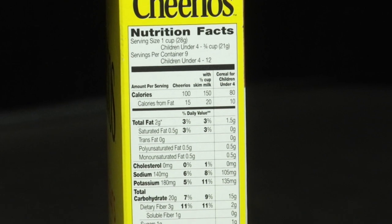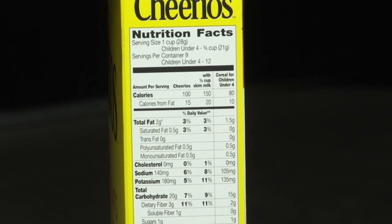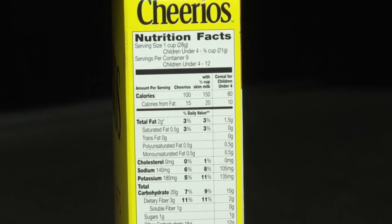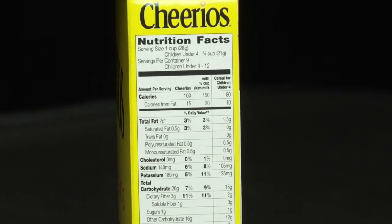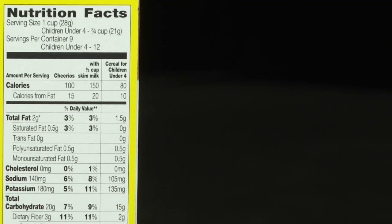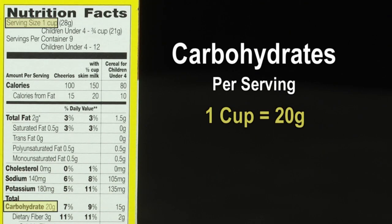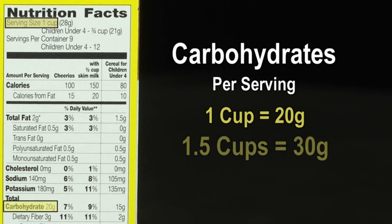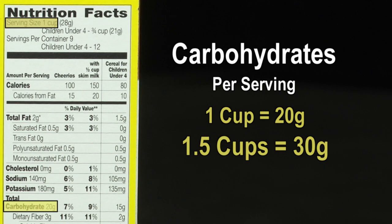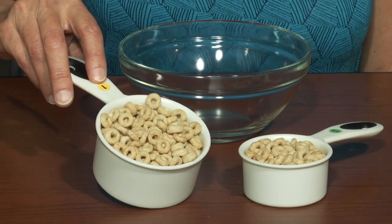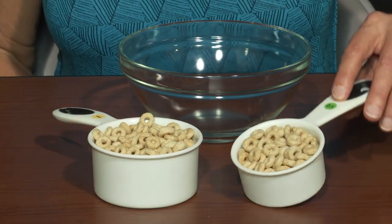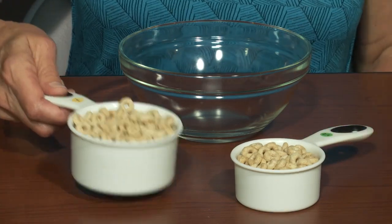First, let's use the label on the box of Cheerios to determine the amount of carbohydrates in a serving. The label says that one cup equals 20 grams of carbohydrates. Since you'll be having one and a half cups, the Cheerios will total 30 grams of carbohydrates. Measure out one and a half cups of Cheerios and put them in a bowl.